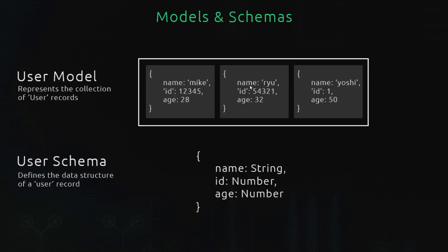A user schema defines the data structure of a particular record in that model. For example, each record might have a name, id, and age — the schema is going to define those properties and their types, such as string, number, and number. So we need to define both: a user schema to say what information we're storing, and a user model to represent our whole collection of users.